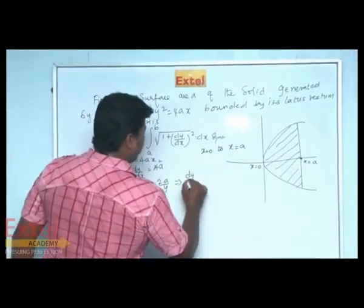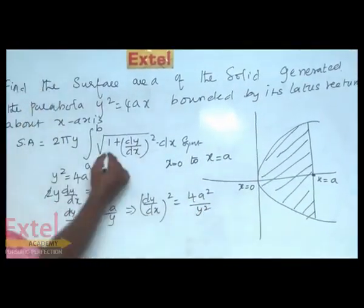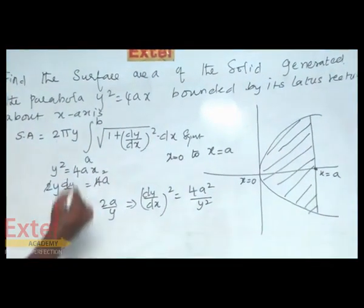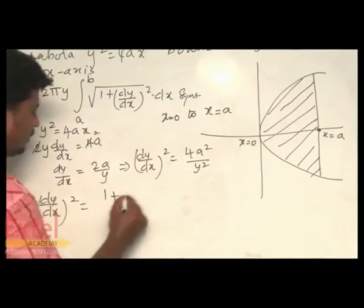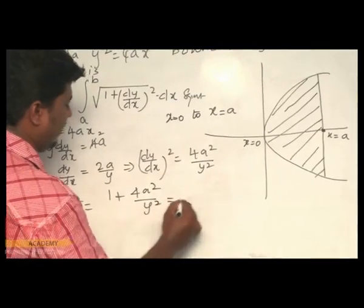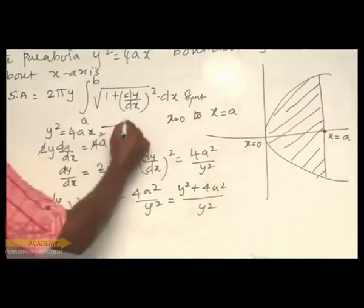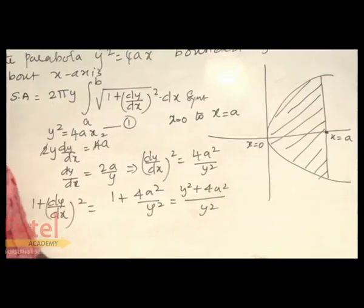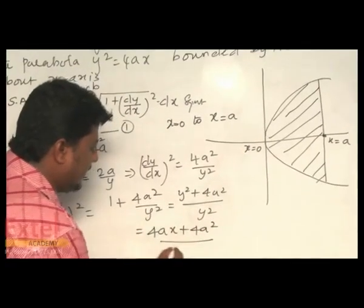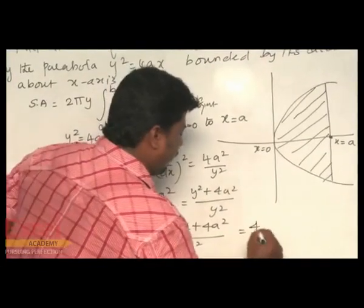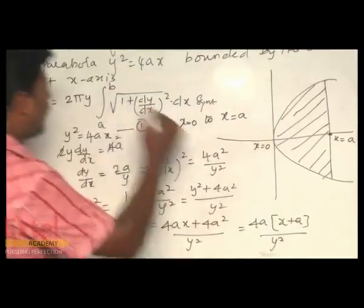Therefore (dy/dx) squared equals 4a squared divided by y squared. Now finding 1 plus (dy/dx) squared: this equals 1 plus 4a squared over y squared. Taking LCM gives (y squared plus 4a squared) over y squared. Substituting y squared equals 4ax, we get (4ax plus 4a squared) over y squared, and taking 4a common gives 4a(x plus a) over y squared.